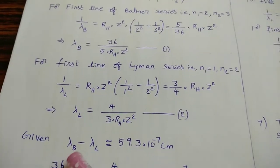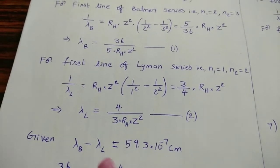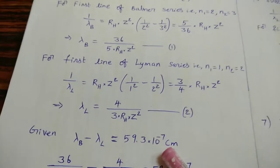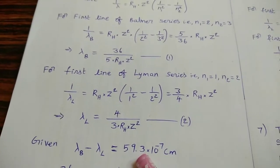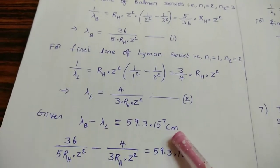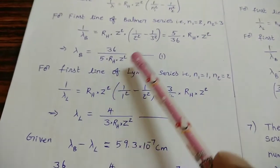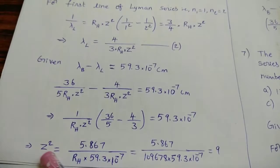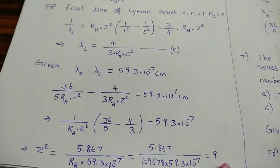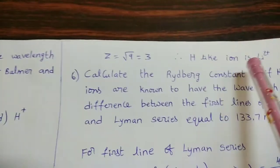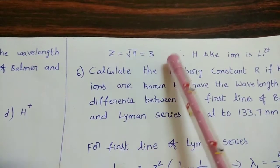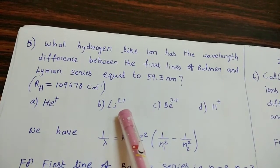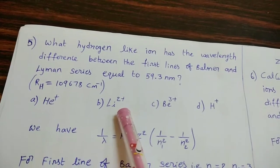Now taking this difference — first line of Balmer series minus first line of Lyman series — equal to 59.3 nanometers. Convert that into centimeters. Lambda B means Balmer wavelength, lambda L means Lyman wavelength. Substituting these, we get Z² = 9, so Z = 3. Z = 3 means the hydrogen-like ion is Li2+ (lithium, atomic number 3). Option B is the answer.